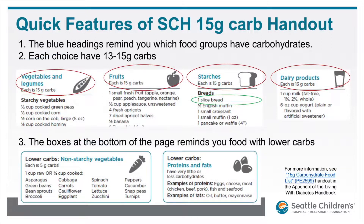This is a handout that most families are familiar with. Please ask parents to share a copy with you. First, review the blue headings — these remind you which food groups have carbs. Second, note that each choice is listed as a portion, and each portion contains approximately 13 to 15 grams of carbs, as indicated by that section.